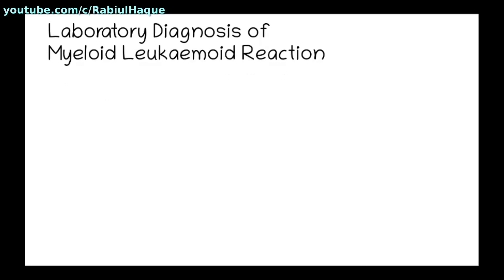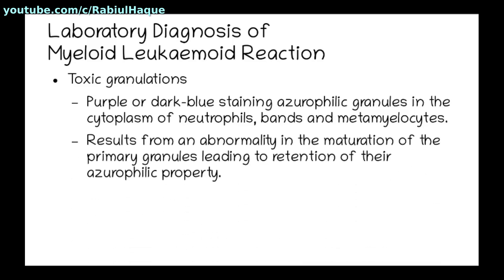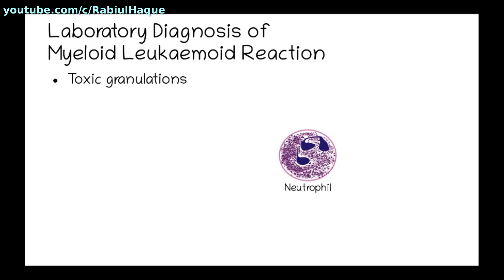Toxic granulation and Döhle bodies may be seen in the cytoplasm of neutrophils in infective cases. Toxic granulations are purple or dark blue staining azurophilic granules in the cytoplasm of neutrophils, bands, and metamyelocytes. They result from an abnormality in the maturation of primary granules, leading to retention of their azurophilic properties. This slide shows an image of a neutrophil with segmented nucleus and toxic granules.